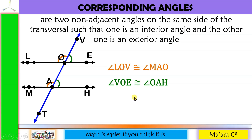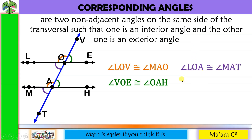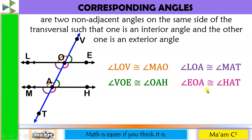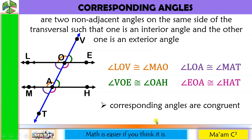We have more pairs here. Angle LOA and angle MAT are corresponding angles — one on the interior and its partner on the exterior — and they are congruent. Last pair: angle EOA and angle HAT are corresponding angles and they are congruent. So parallel lines cut by a transversal form four pairs of corresponding angles, and these angles are congruent.